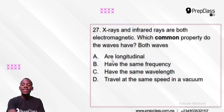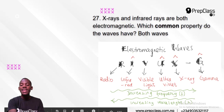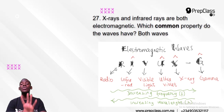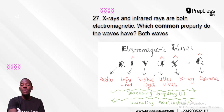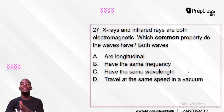So option A — they are longitudinal — is wrong. Regarding option B, they don't have the same frequency. The one with the highest frequency is gamma ray, then X-ray, then ultraviolet, then visible light, then infrared, and the least is radio wave. They also don't have the same wavelength — the highest wavelength belongs to radio waves, down to gamma ray which has the shortest. So option B and option C are both wrong.